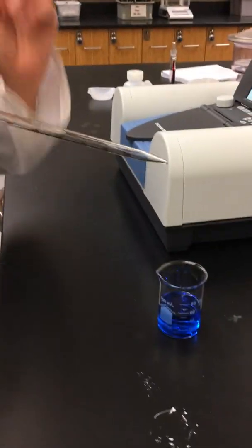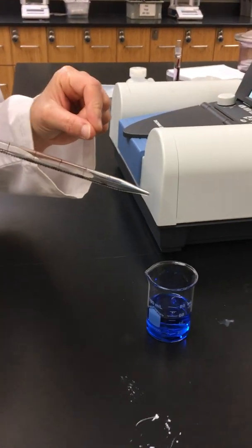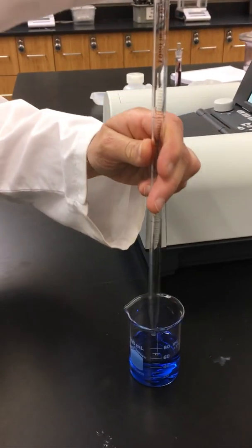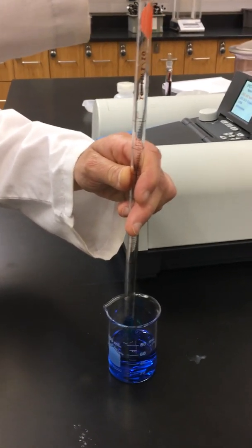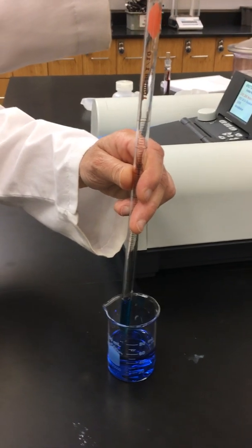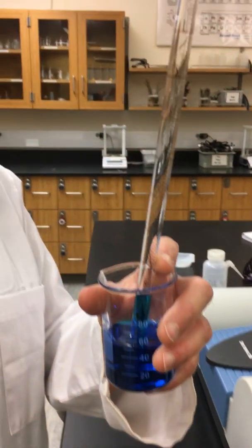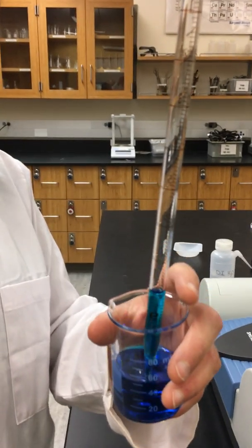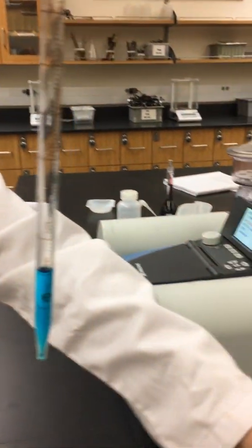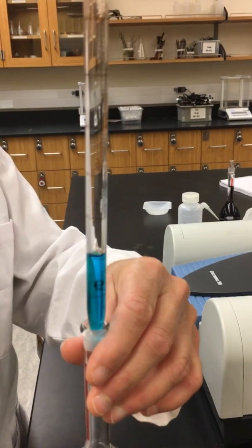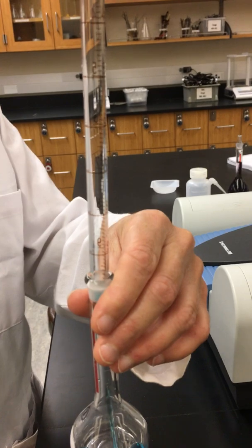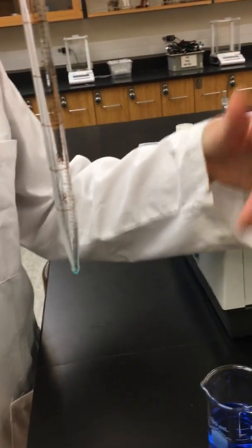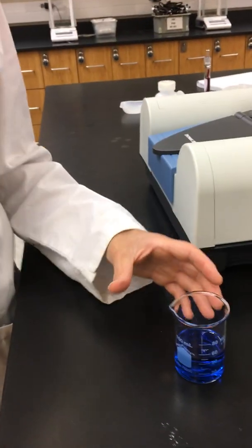Now we're going to be making 5 different dilutions of this. And so in our first one we're going to be adding 2 milliliters. Using my pipette I'm pulling up 2 milliliters and now we're going to add it to our first flask. And then we will be adding water after we do each one to bring it up to a total of 50 milliliters.